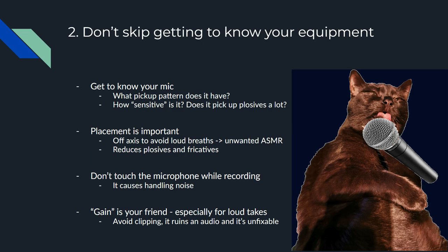Plosives and fricatives are consonants that cause unwanted noise in recordings when spoken directly into the microphone, usually when there isn't a pop filter. They are the airflow when you say P, T, K, B, D, G — and it hits the microphone and usually causes clipping. Clipping is when the audio is too loud and can't be played back properly, producing a terrible sound. It can also ruin the gear, but usually not that quickly.